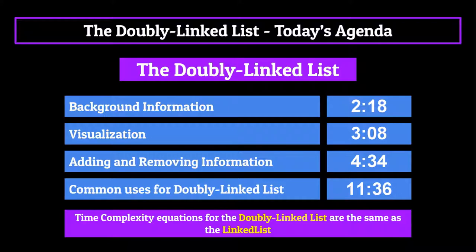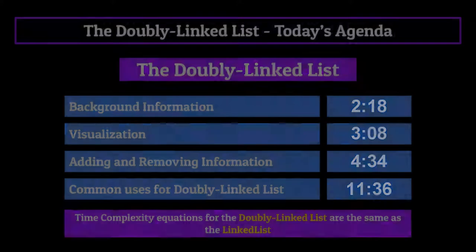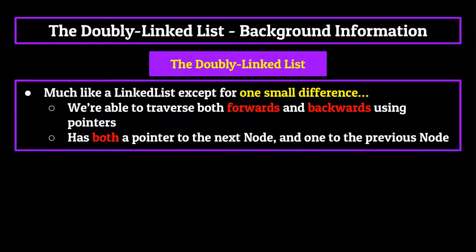What exactly is a doubly linked list? Well, a doubly linked list is almost exactly the same as a linked list, except for one small difference. With a doubly linked list, we're able to traverse both forwards and backwards using the pointers.